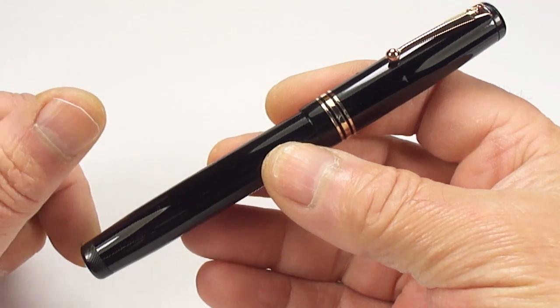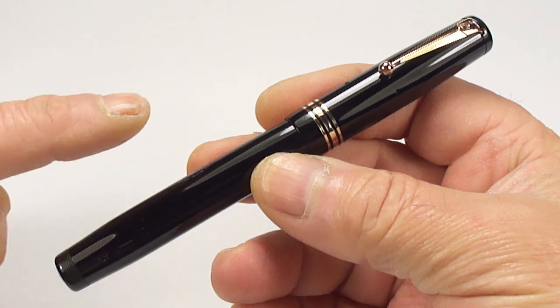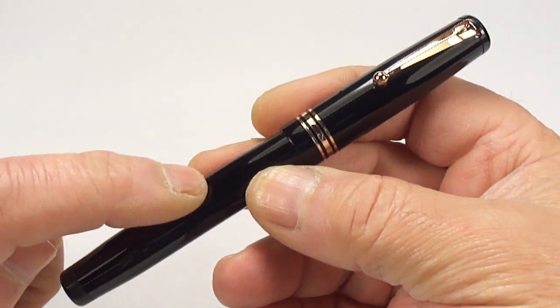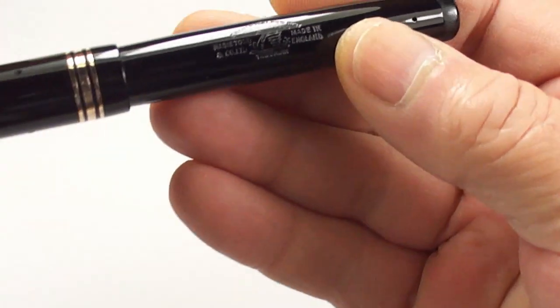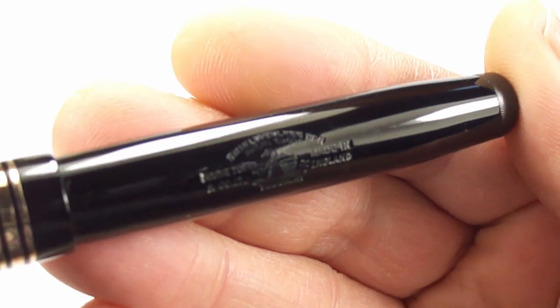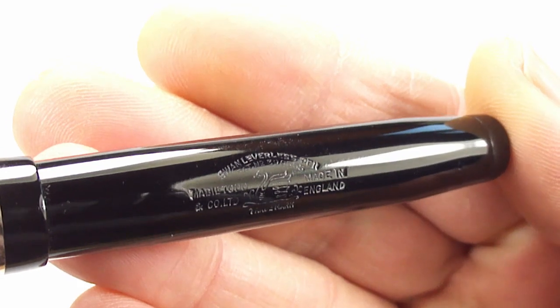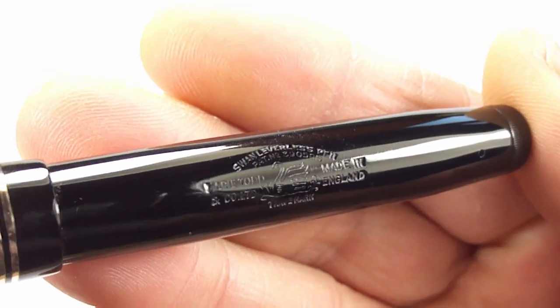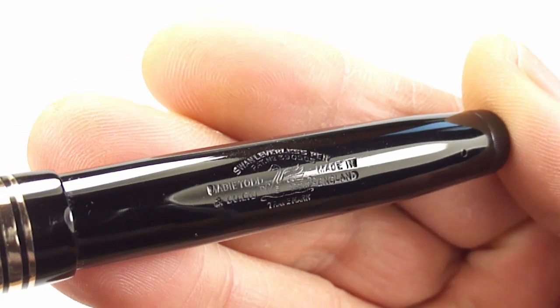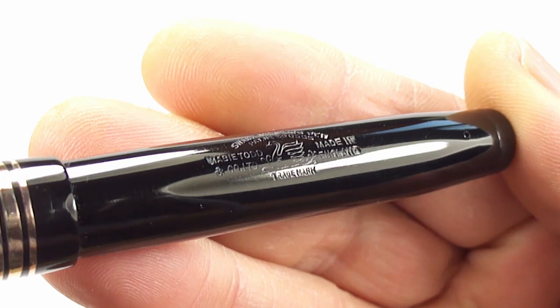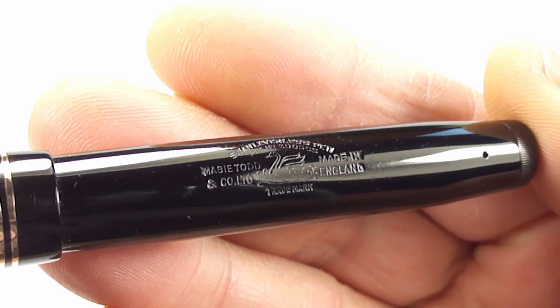Yes, it's a Swan Mabie Todd fountain pen. Let me first of all show you the barrel imprint, lovely and clear. As you can see there it says Swan leverless fountain pen, underneath it's got the patent, the Swan logo, made in England - a lovely clear barrel imprint.